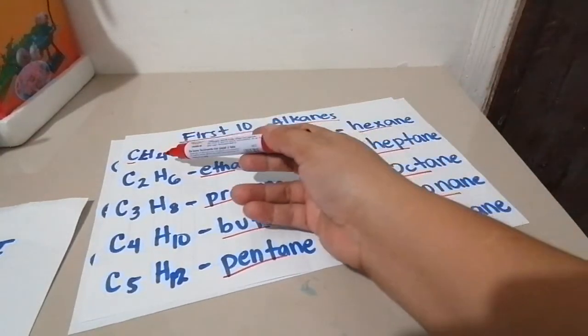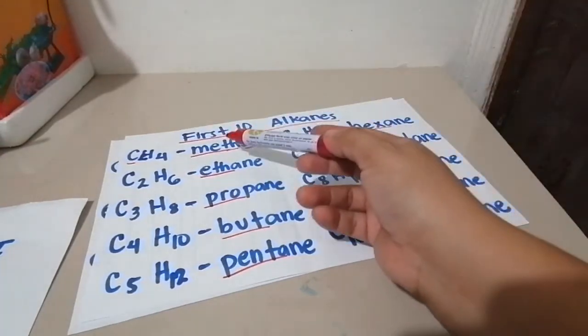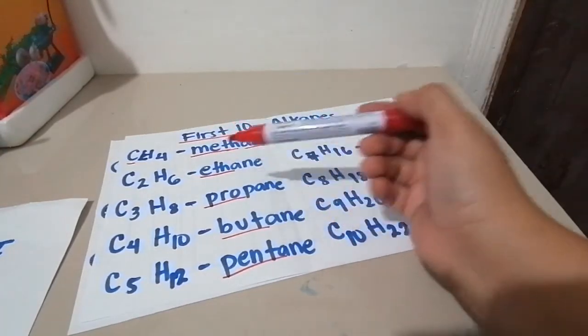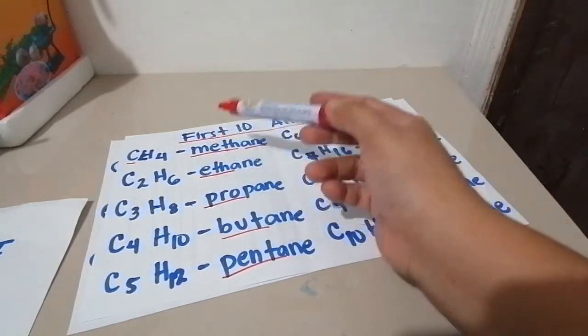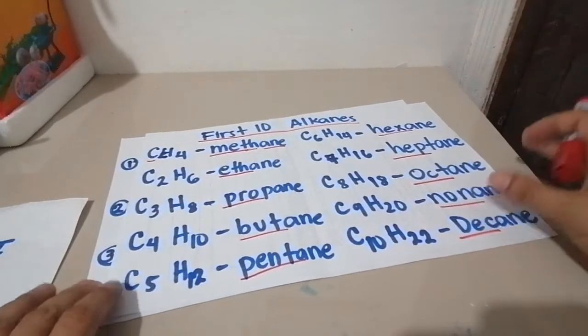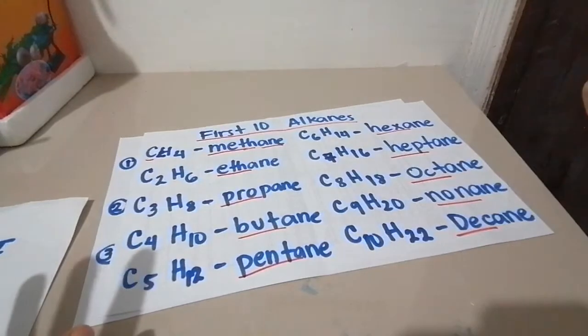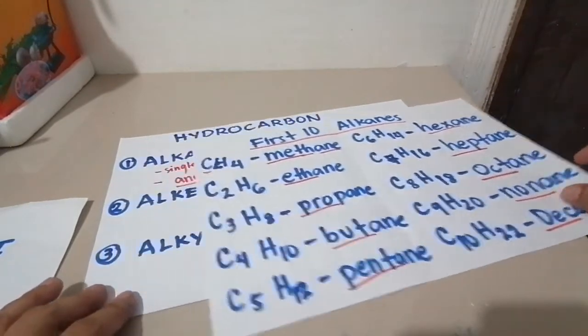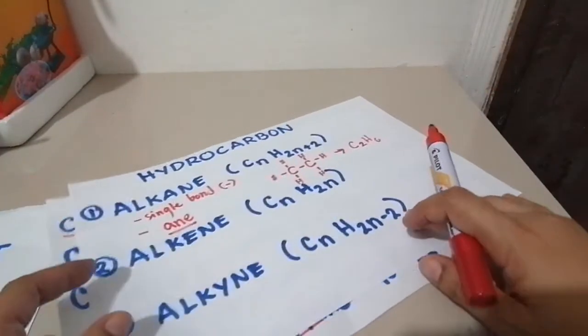For example, if this is alkane, it becomes methane. If it's alkene, it becomes methene. That's how we name hydrocarbons. Let's discuss alkenes.